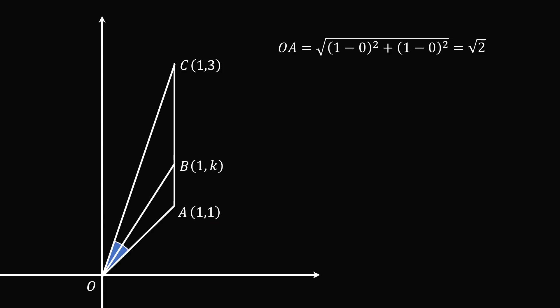We can use the distance formula to calculate the length of OA. It will be equal to the square root of 2. We can also calculate the length of OC. This will be equal to the square root of 10.